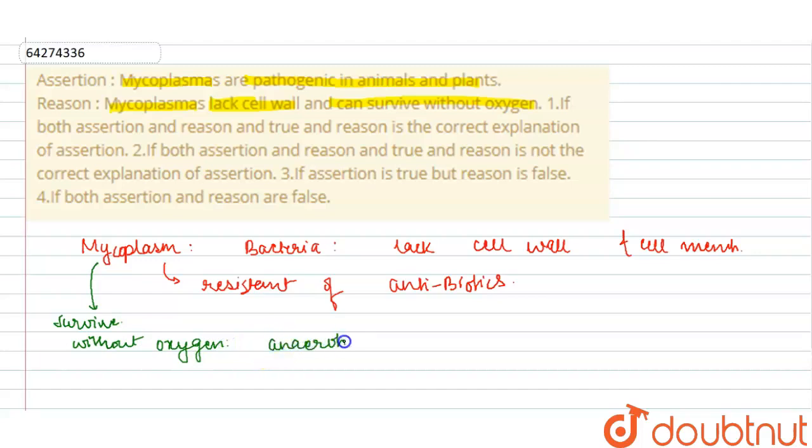So our assertion says that mycoplasma are pathogenic in plants and animals. Yes, they are pathogenic in case of plants and animals, and they are resistant to many of the antibiotics. Mycoplasma lacks cell wall and can survive without oxygen. This statement is also true, and assertion is also true.